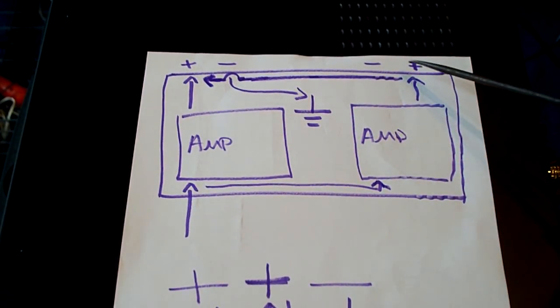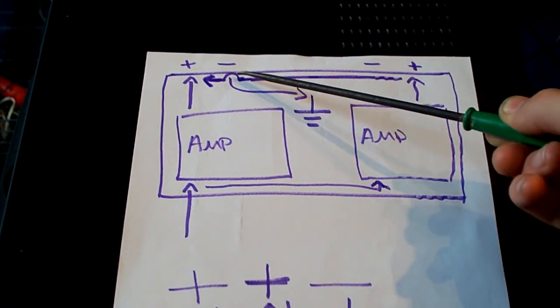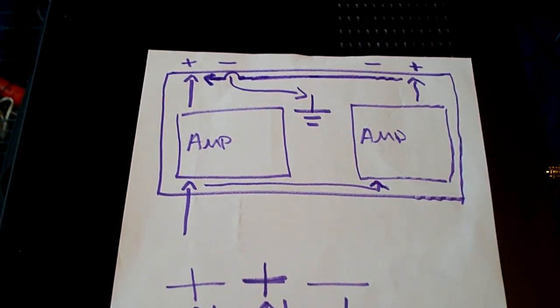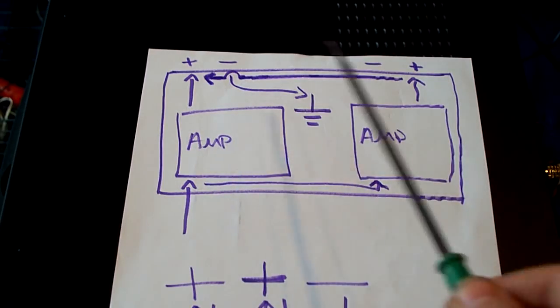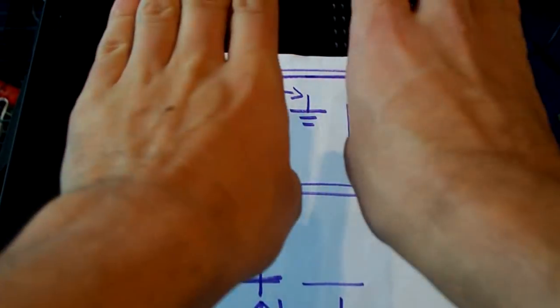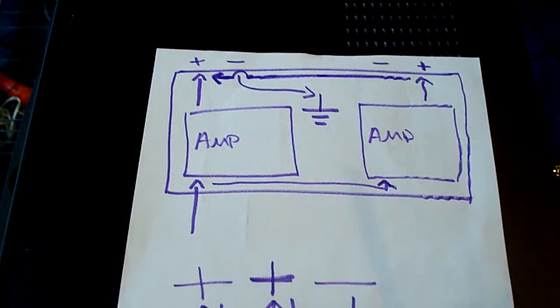And the second amplifier, the positive, is then paralleled to the first positive. So in effect, both amplifiers, you've paralleled both amplifiers together. So they're both pushing and pulling at the same time.